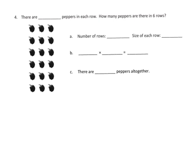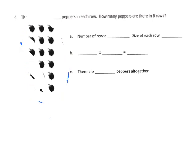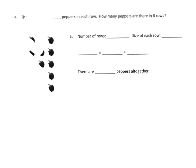Now we're talking about an array. They give us essentially the same problem, only now it's an array. It says: how many peppers are in each row? We can say there are three peppers in each row. Then, how many peppers are in six rows? Counting the rows: one, two, three, four, five, six — so there are six rows.